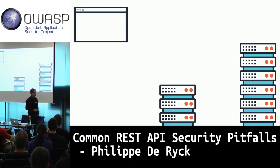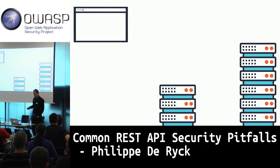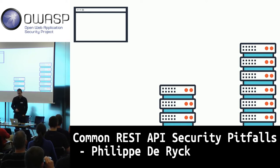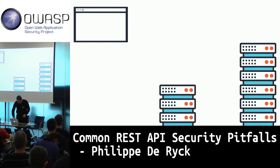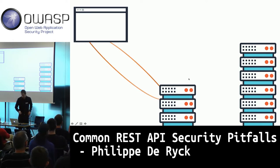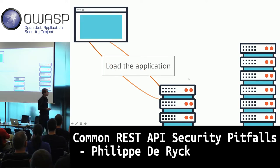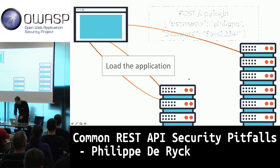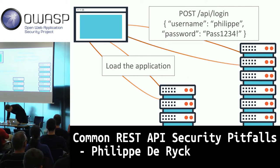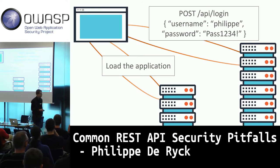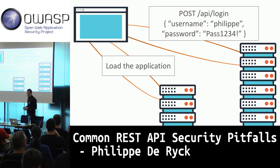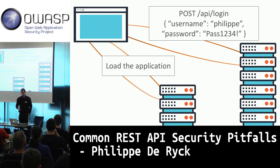We have a browser application on top, and a server or servers on the right. Essentially what's going to happen is that we load our application from one server and then fetch data from an API and work with that data. As you can imagine, this kind of setup changes a few things. It has an impact on certain security properties, but it also maybe simplifies a few things.